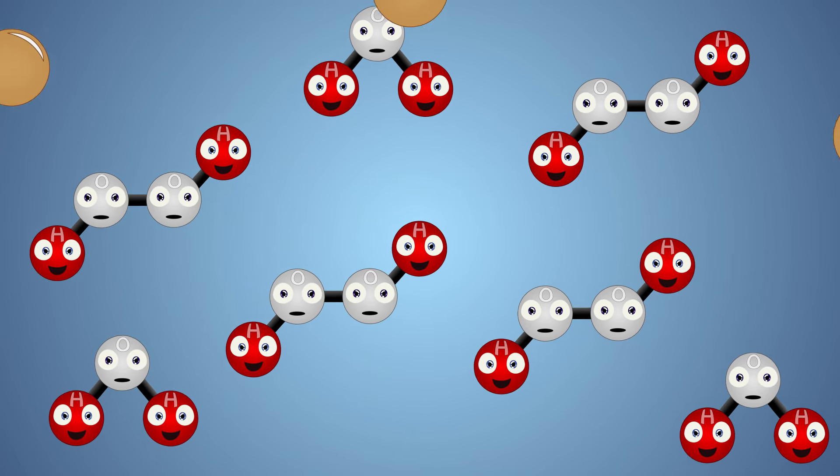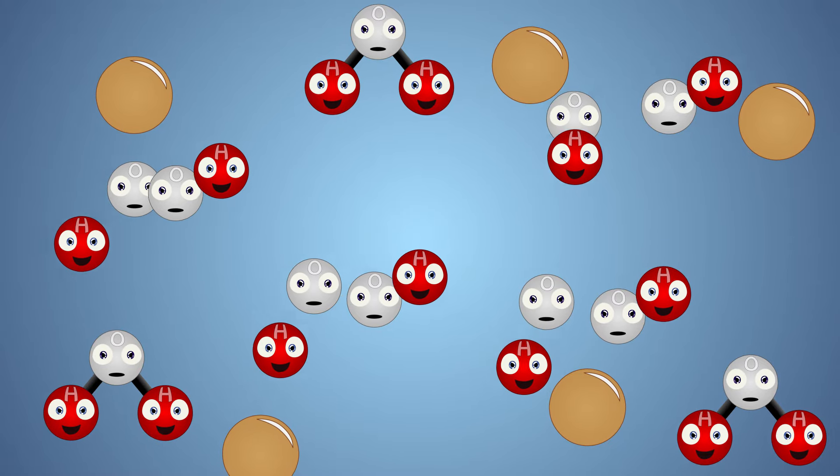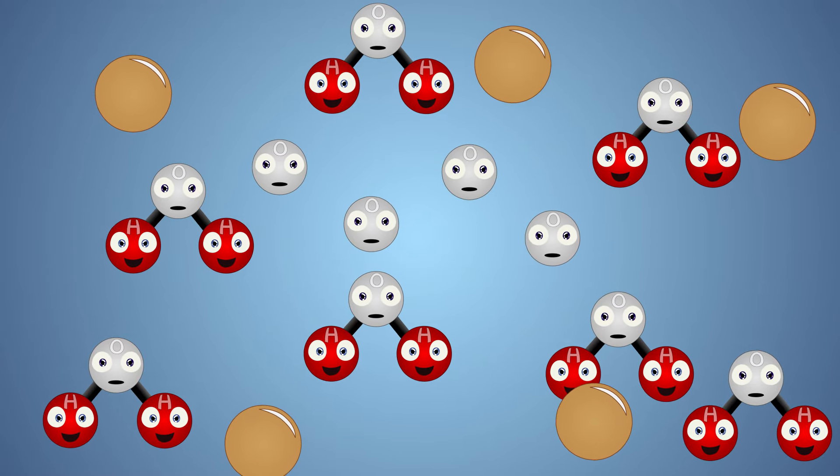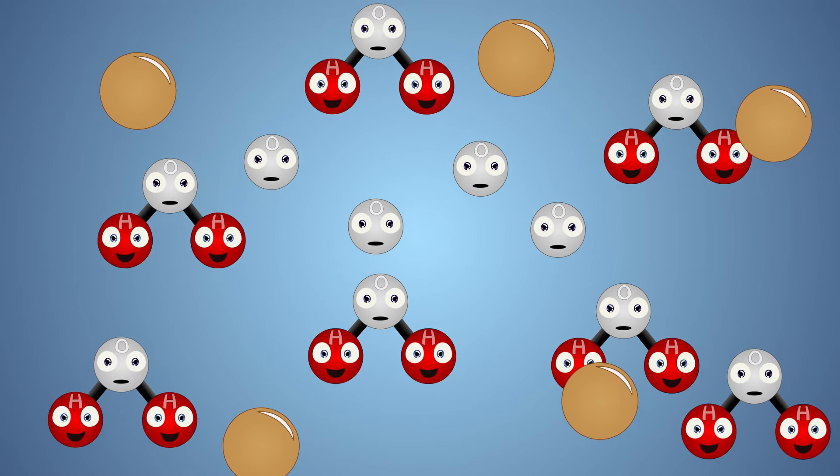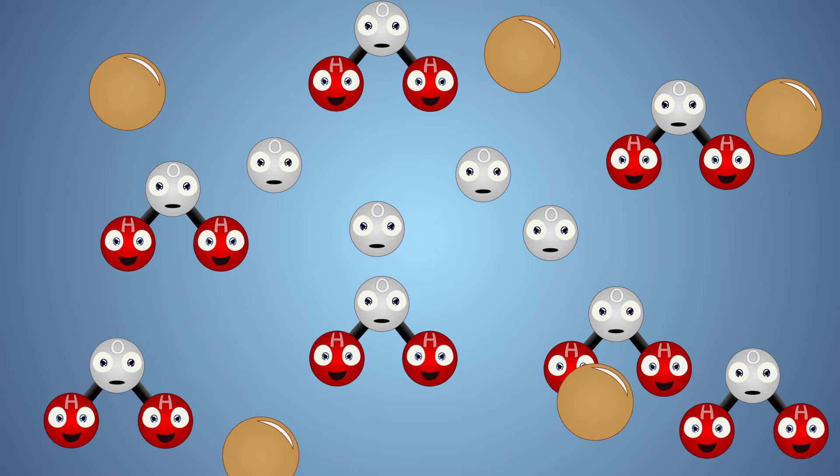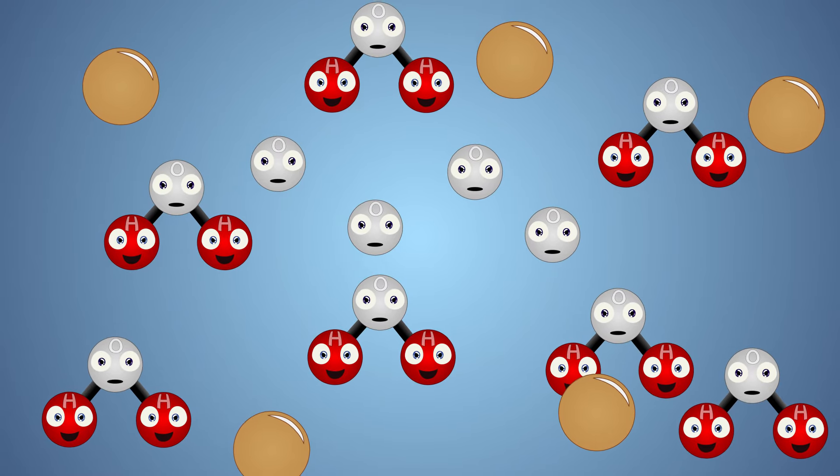When we mix the yeast into our hydrogen peroxide, the catalase from our yeast rapidly breaks one of the oxygen atoms off of each hydrogen peroxide molecule. This leaves us with one oxygen atom and a water molecule for each hydrogen peroxide molecule.